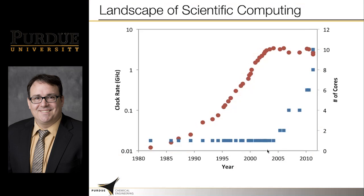In addition to multi-core desktops, we also saw a tremendous increase in the use of other emerging architectures like graphics processing units, the GPU, for scientific computing. Around 2005, it was pretty easy to get a GPU for scientific computing with 128 cores. Today, we can find these with thousands of cores for relatively cheap. So it's clear that our focus needs to shift towards algorithms that can take advantage of parallel computing.